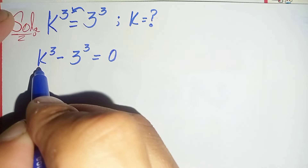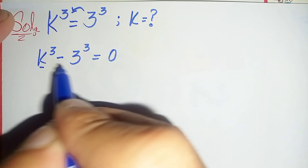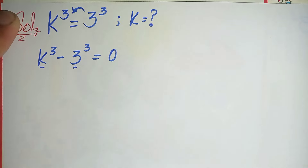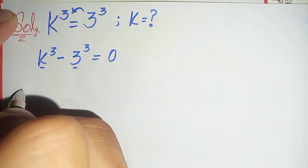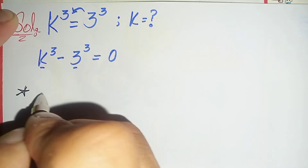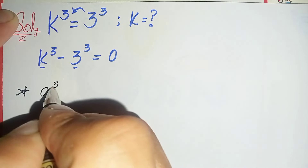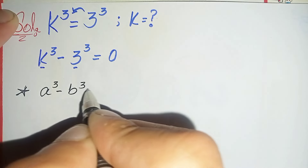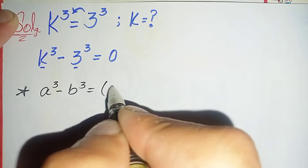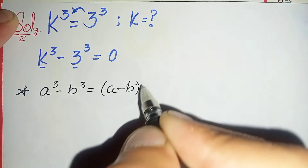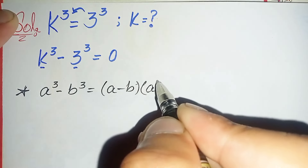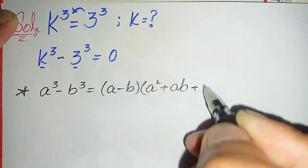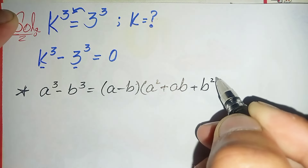In the left hand side, this is a cubic identity: a cubed minus b cubed. So here we will use the cubic algebraic identity: a cubed minus b cubed is equal to a minus b, times a squared plus ab plus b squared.